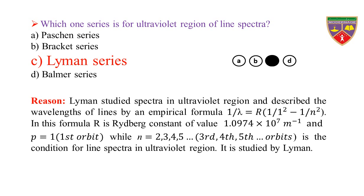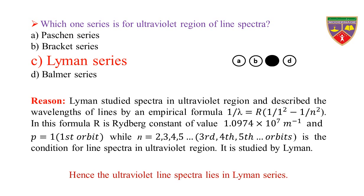1/λ = R(1/1² − 1/n²). In this formula, R is a constant of value 1.0974 × 10⁷ per meter, and p = 1 which is the first orbit, while n = 3, 4, 5, and so on — third, fourth, fifth and so on orbits — is the condition for line spectra in the ultraviolet region. It is studied by Lyman. Hence, the ultraviolet line spectra lies in the Lyman series.